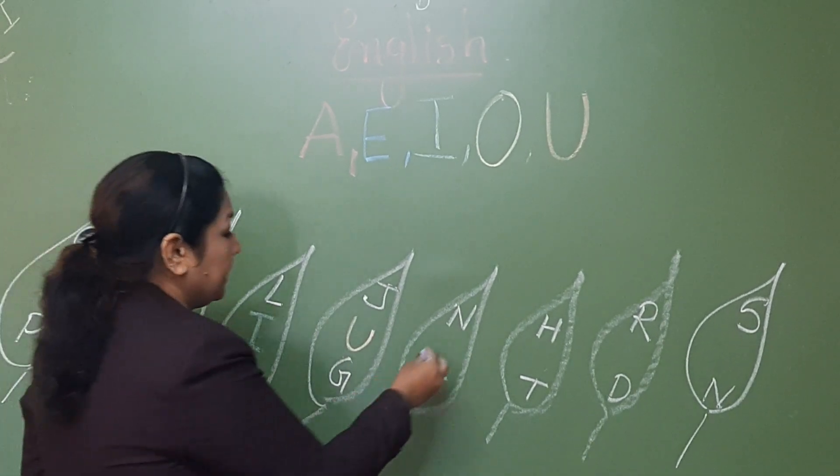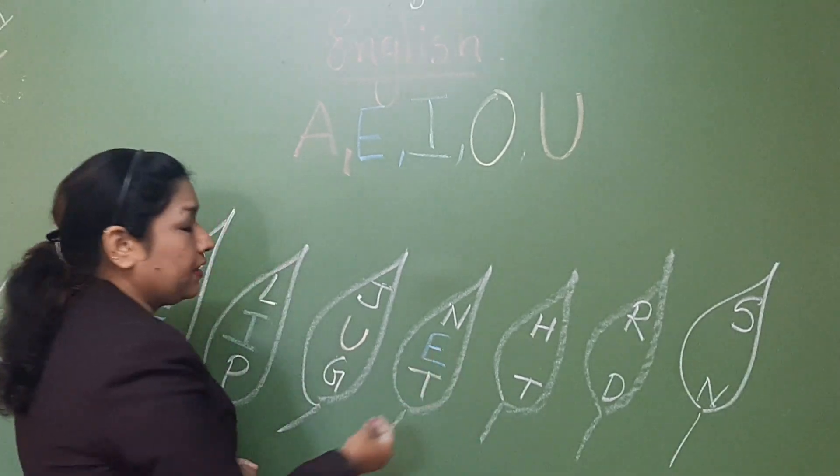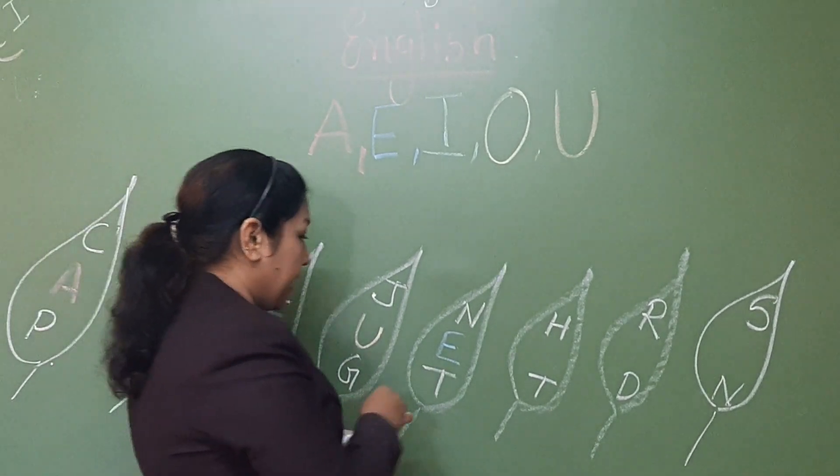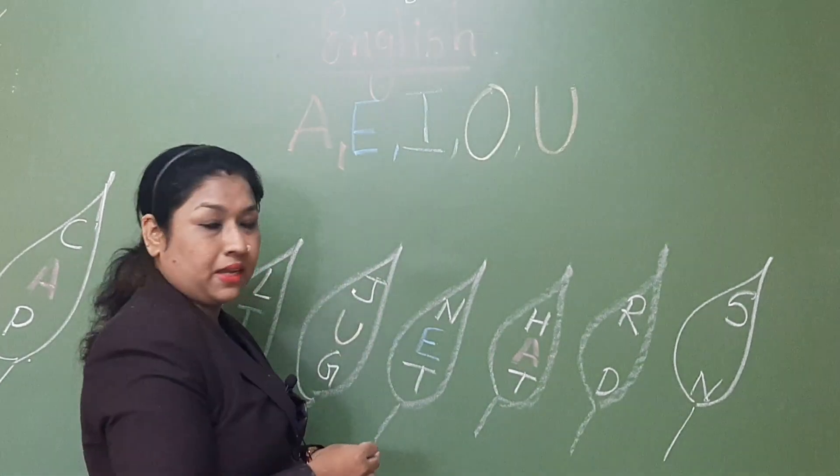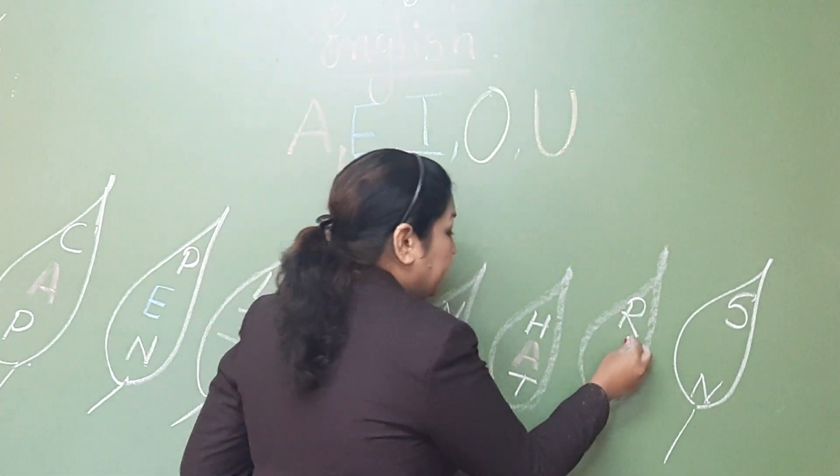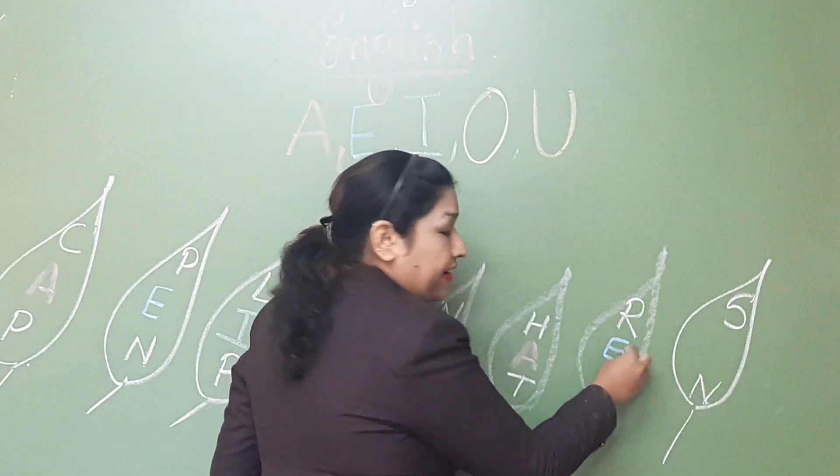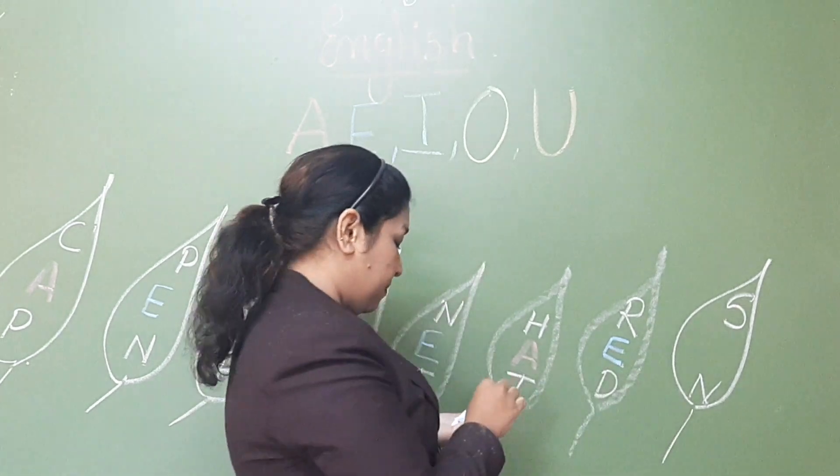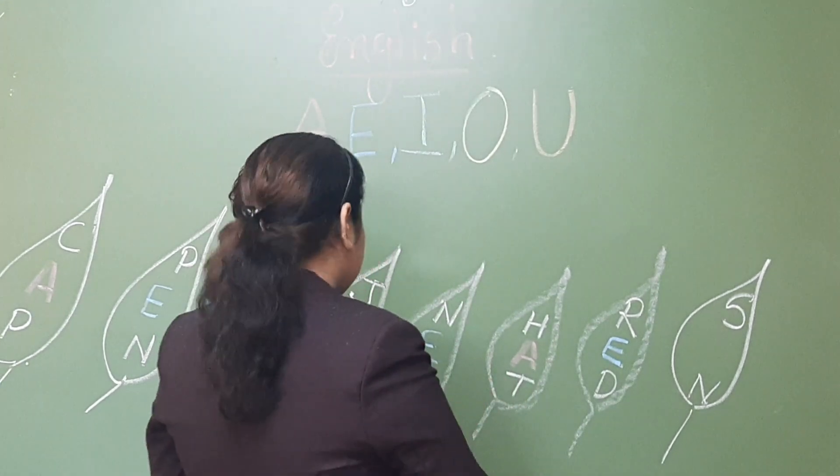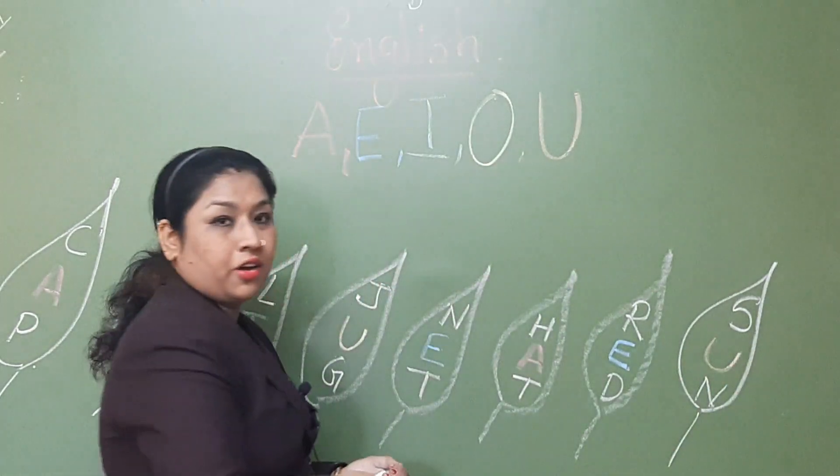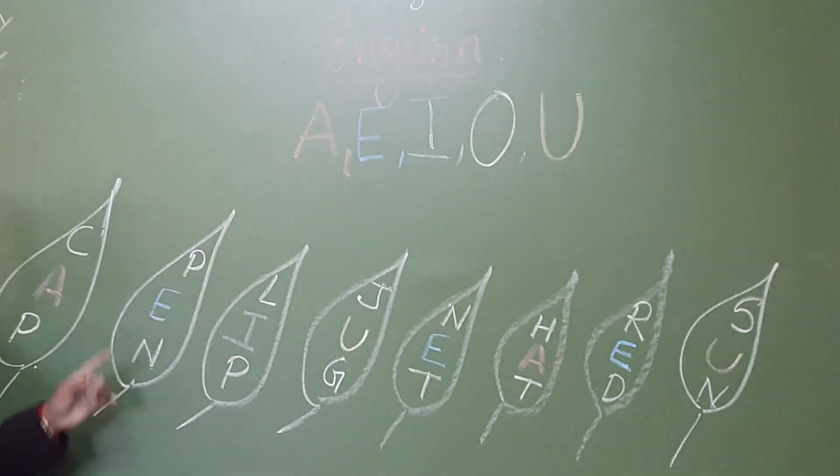N, E, T, net, E with blue color. H, A, T, hat, A with pink color. R, E, D, red, and E with blue color. S, U, N, sun, U with orange color. Right.